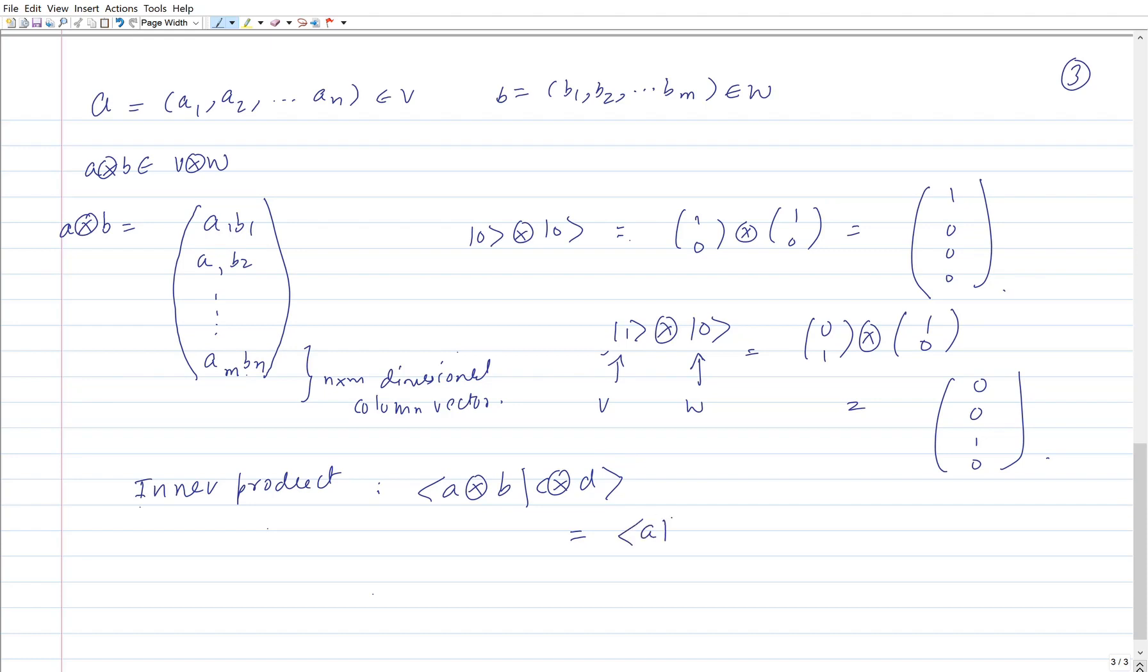The inner product is just the product of these two complex numbers where A and C both belong to V and B and D both belong to W.